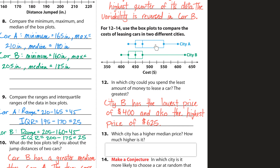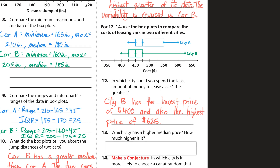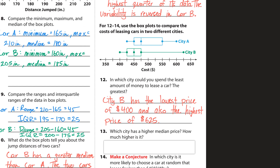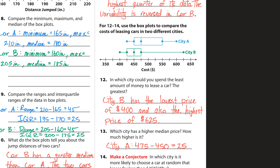Which city has a higher median price? The higher median price is city A. The median for city A is 475 and the median for city B is 450, so city A's median is higher by 25 dollars — calculated as 475 minus 450.